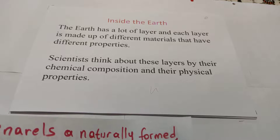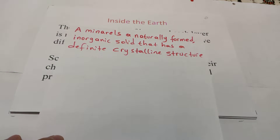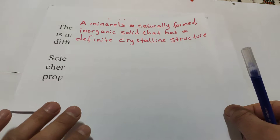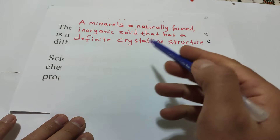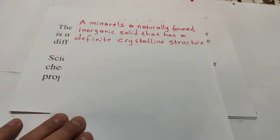Before that, let us make a revision of our previous lesson. We finished in Chapter 5 - Minerals. Remember minerals. What is minerals? Minerals are naturally formed inorganic solids that have a definite crystalline shape. This is one definition of mineral.